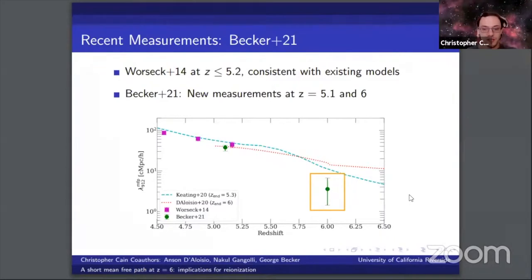But the measurement at redshift 6, which I've highlighted here, is significantly shorter than predicted by a model of reionization that is 20% neutral at redshift 6. This presents a challenge for existing reionization models, and it's a challenge we'll be addressing in this talk.